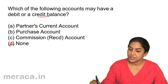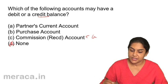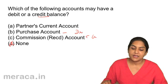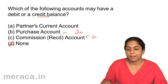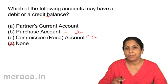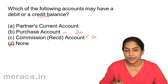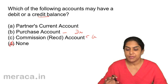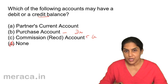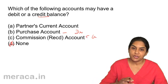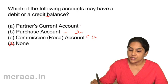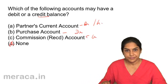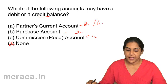Commission received will have a credit balance. Purchase account will have a debit balance. What is a partner's current account? It is an account in which all payments to a partner are recorded. A partner is a part owner of a firm, so salary may go to that account. If he withdraws money, it may be through the current account. Since his incomes and withdrawals both go to the same account, this could sometimes have a debit balance and sometimes a credit balance. So the correct answer is A.